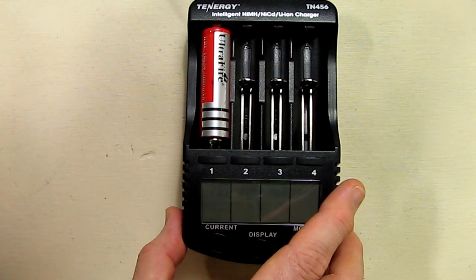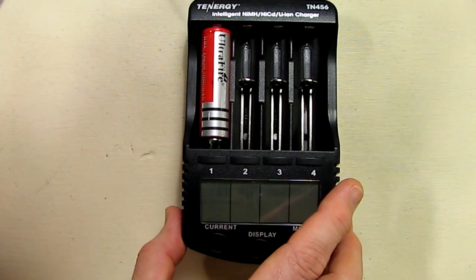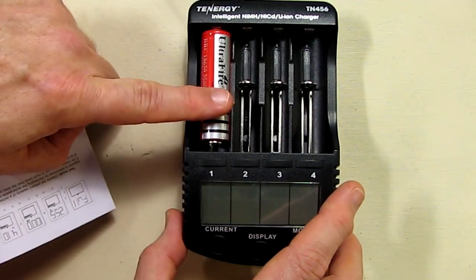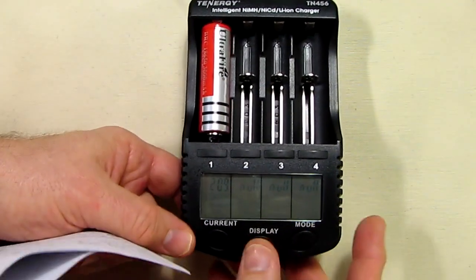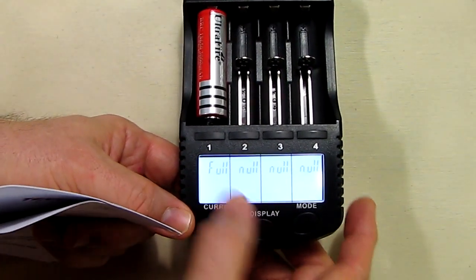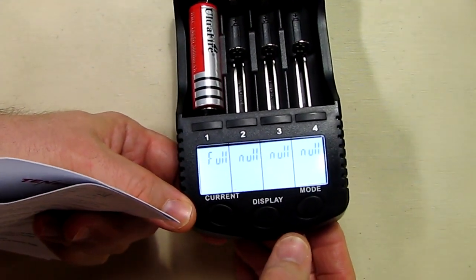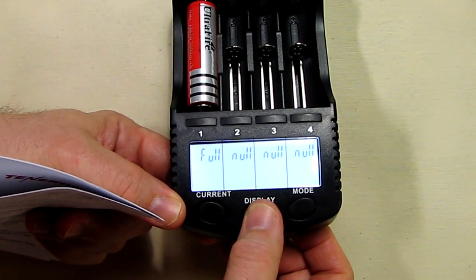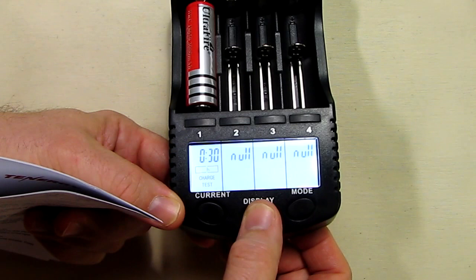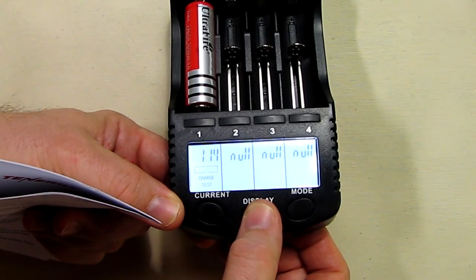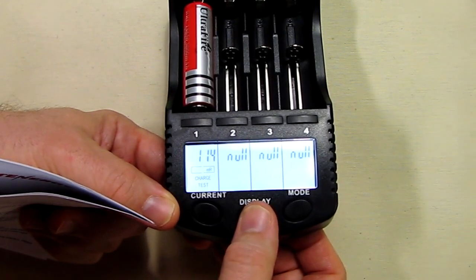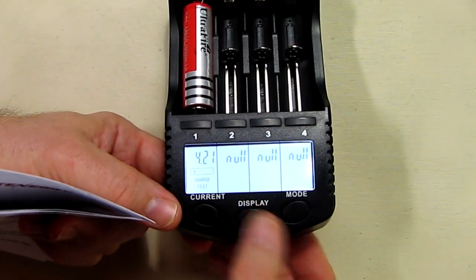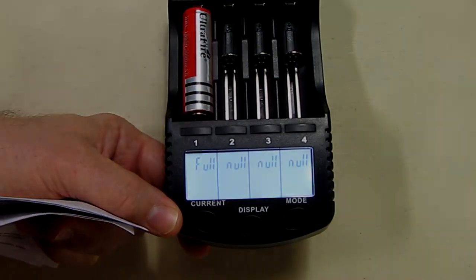And you can see it completed and it shows that the battery is full. And it put 209 milliamps in the battery in 30 minutes. Internal resistance 114 and it's full now. So that's a way to cycle your batteries and that's a nice feature that it has.